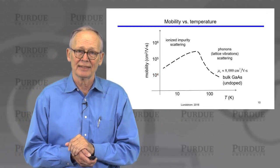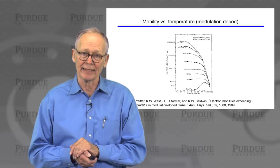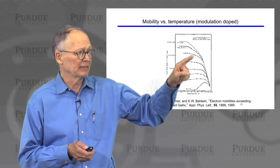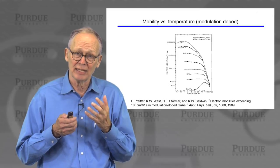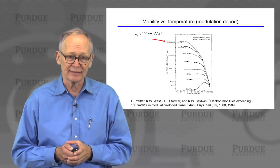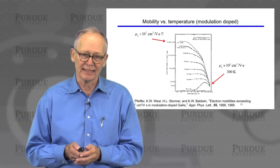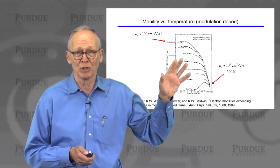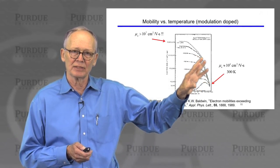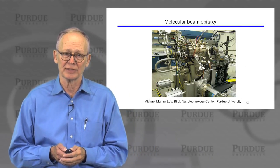As temperature increases, ionized impurities have a weaker scattering effect because electrons move past them faster. At very low temperatures, in very pure materials, mobilities can be extraordinarily high and may not turn around at all due to minimal ionized impurity scattering. People have achieved mobilities of over 10 million — but these are at low temperatures, not device operating conditions. Our goal at room temperature is to achieve mobilities close to those of pure undoped material, on the order of 10,000 for these 3-5 materials.